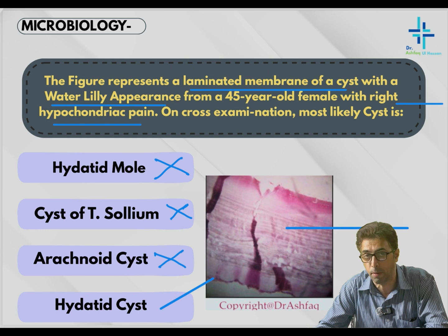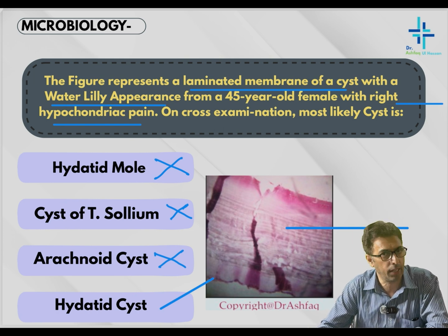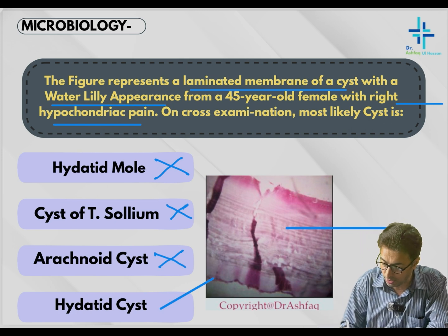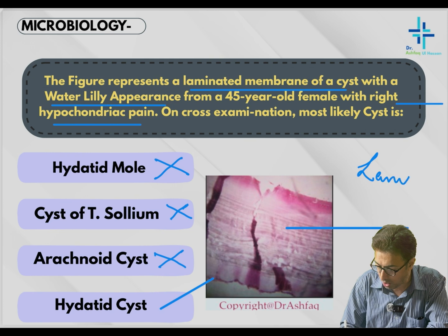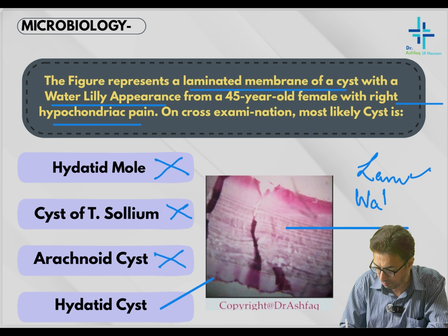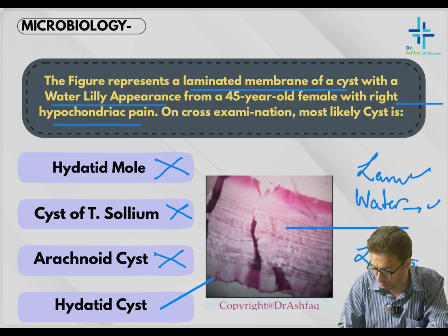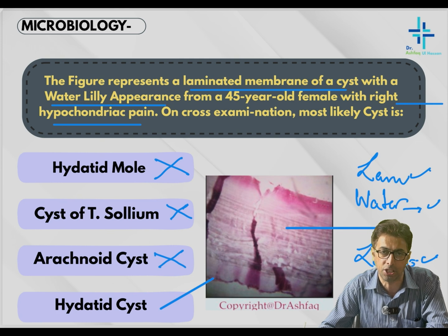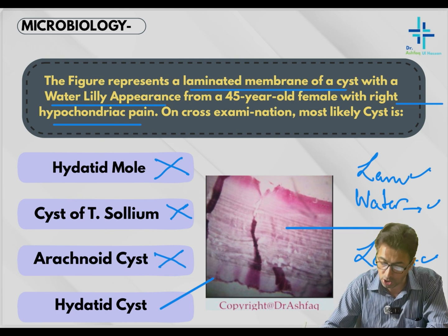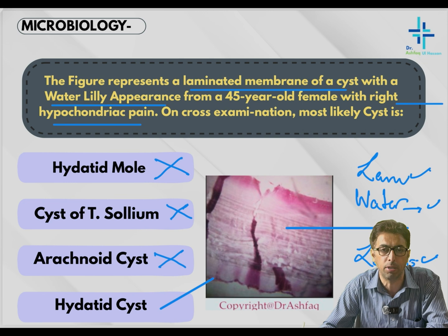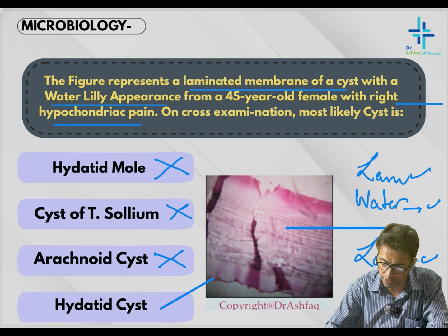The hydatid cyst is confirmed by multiple clues: the water lily appearance is characteristic of hydatid cyst; the laminated membrane is characteristic of hydatid cyst; and the location — the right lobe of the liver — is also characteristic, since 90% of hydatid cysts lie within the right lobe. An examiner cannot give more clues than this. So the answer is hydatid cyst.